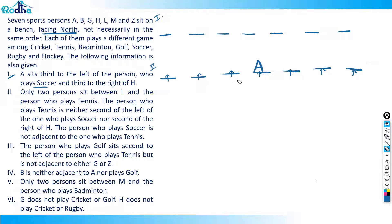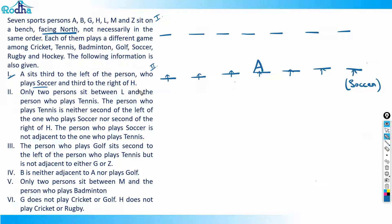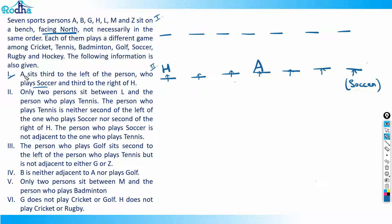A is in the middle because A sits third to the left of the soccer player, so soccer is at the far right end — first left, second left, third left gives us A. Also, A is third to the right of H, so H is at the far left — first right, second right, third right gives us A. First point is done: H, A, and soccer are placed. Put a cross on point one.